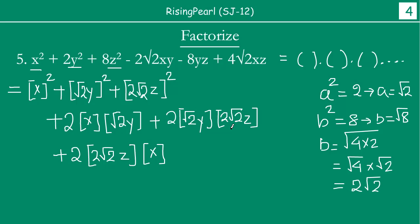Looking at the yz term: 2 × √2 × 2√2 = 2 × 2 × 2 = 8, so the yz term is 8yz. But we have a negative term, so either y or z is negative. For the zx term: 2 × 2√2 × 1 = 4√2, giving 4√2·zx.